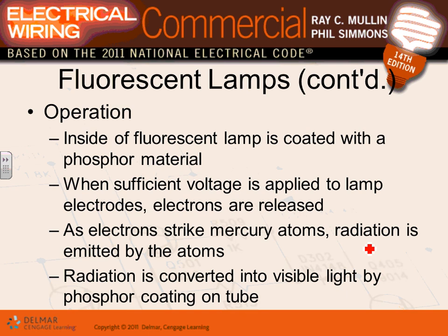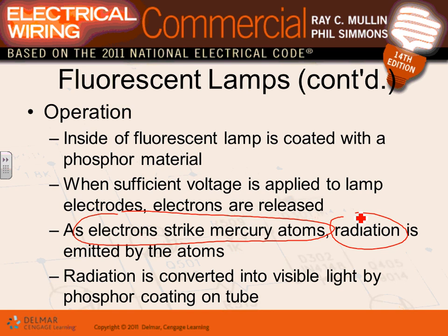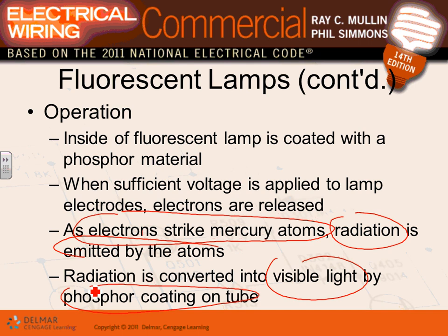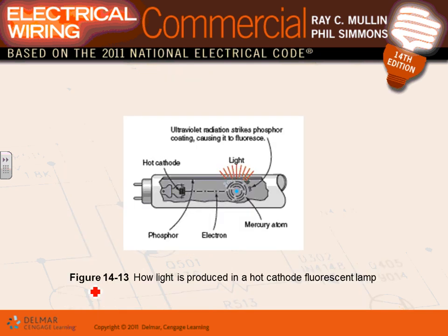Inside the lamp coated with phosphorus material, you heat the cathode, create an arc by pumping the voltage high, and the ballast maintains the arc by controlling the current so the circuit breaker doesn't trip. Sufficient voltage is applied to the electrodes — electrons strike the mercury atoms, releasing radiation. That arc releases electrons that hit the mercury atoms, creating UV radiation. The phosphorus coating inside the tube converts that ultraviolet light into visible light.